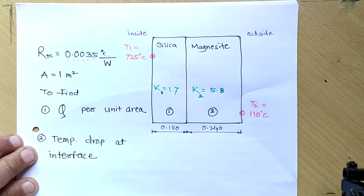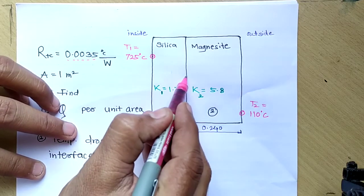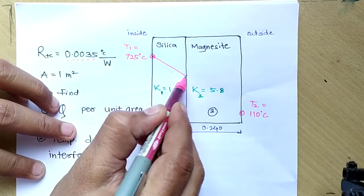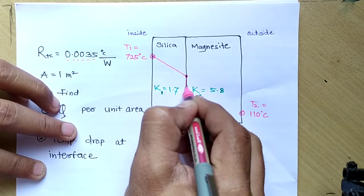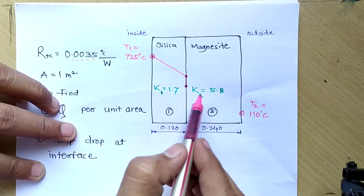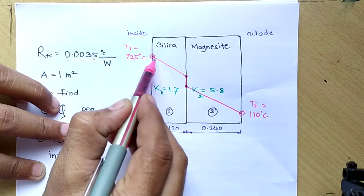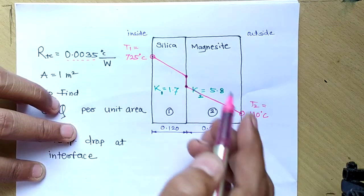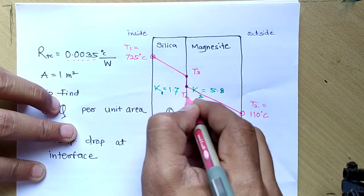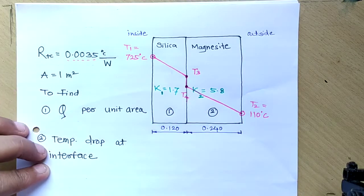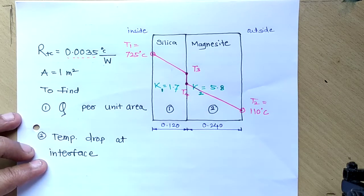If I draw the temperature profile, there is a thermal contact resistance and so there is a temperature drop at the interface, and then it continues to drop. This is what the temperature profile looks like. Here T1 is on the inner surface, T2 is on the outer surface, and at the interface we have intermediate temperatures T3 and T4 — giving us four temperatures total.